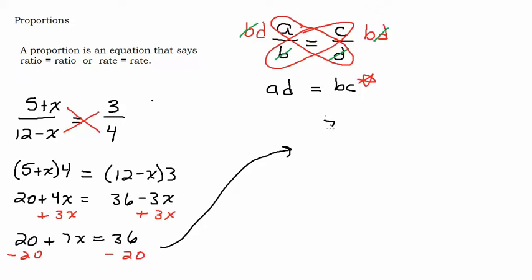So we get 7x equals 16. Divide both sides by 7. And we get x equals 2 and 2 7ths. Wow. Okay.